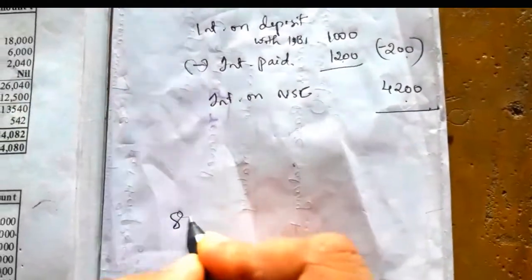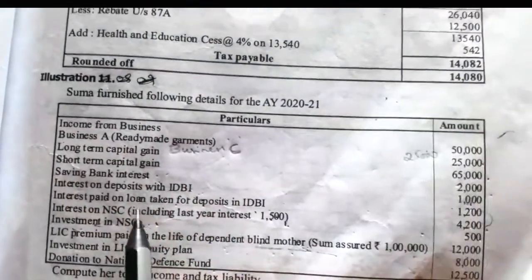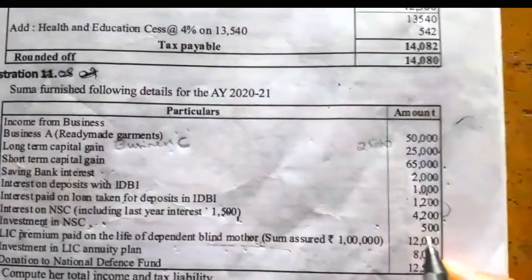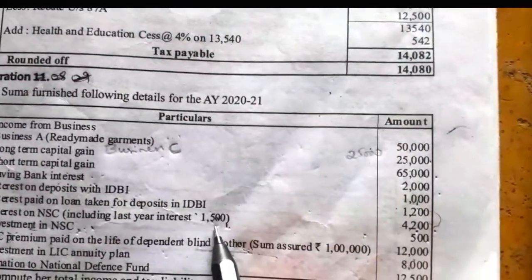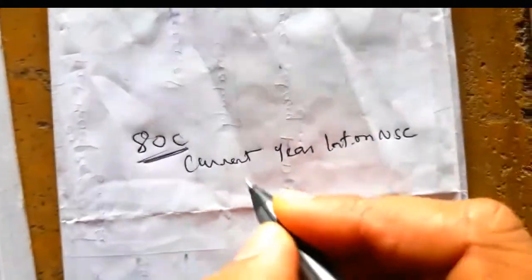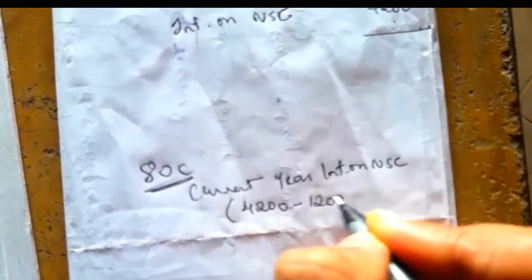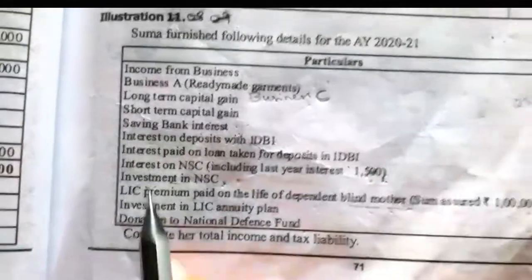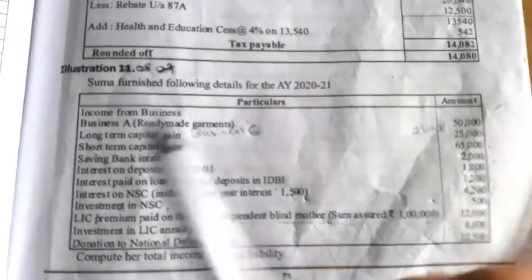While claiming deduction under Section 80C, for the interest on NSC she can claim deduction only for the current year interest. How to calculate: total interest is 4,200 and last year interest included is 1,500, so balance current year interest is 4,200 minus 1,500 = 2,700. For this 2,700 she can claim deduction under 80C, and additionally the 500 investment in NSC can also be claimed in full under 80C.